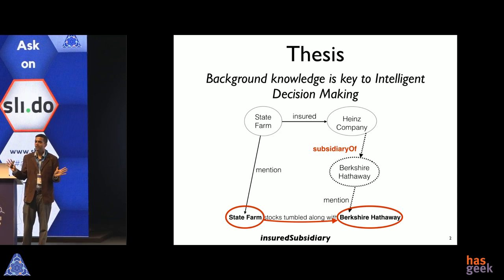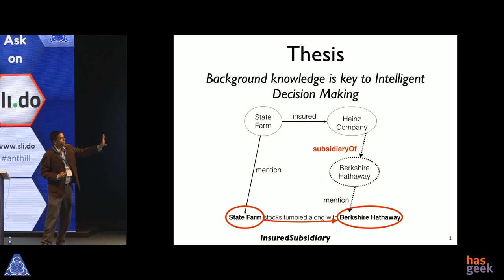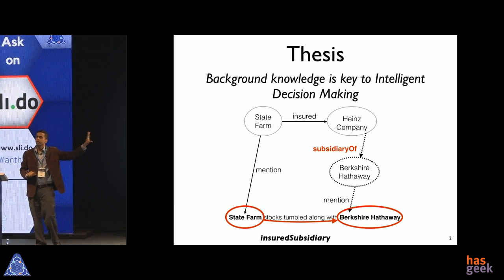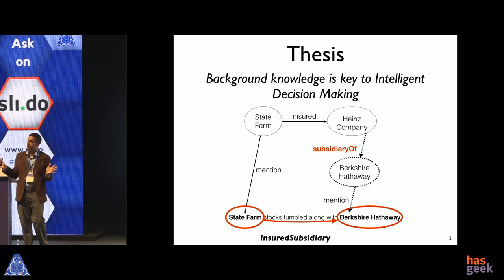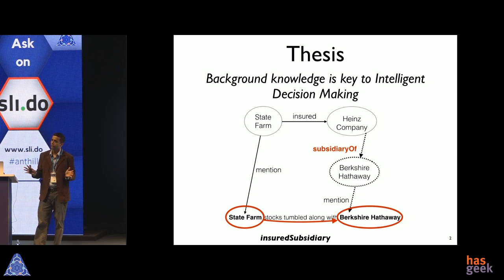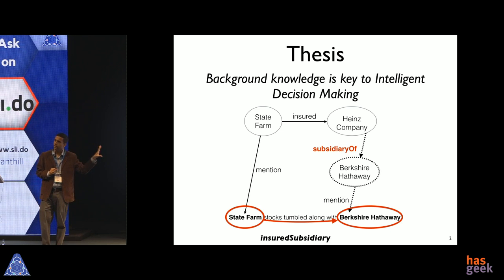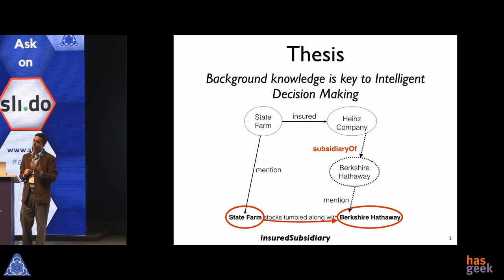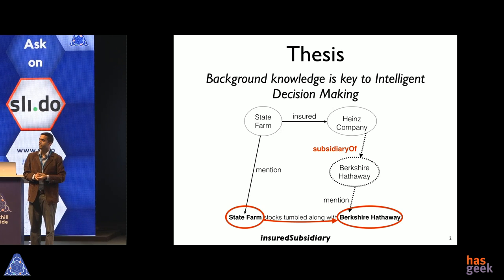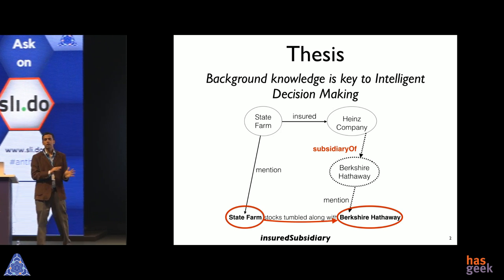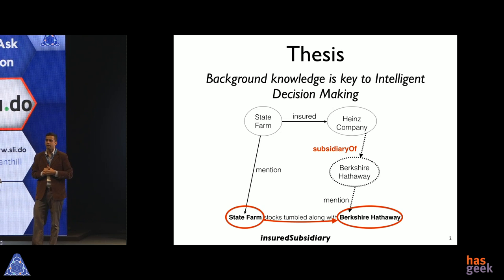This is a multi-relational graph — a fragment of a much bigger graph — and that's what we call a knowledge graph. The nodes are entities and objects of interest, and the typed edges are the relationships that connect those entities. Our thesis is that if we are able to build these knowledge graphs at scale and make them available to AI and machine learning agents, their performance is going to improve significantly. Our research is focused on constructing, maintaining, and applying this kind of knowledge.